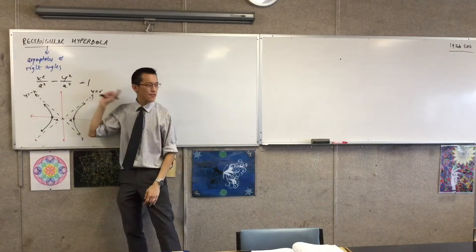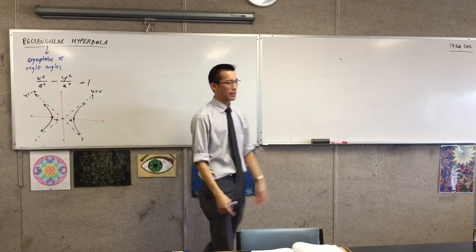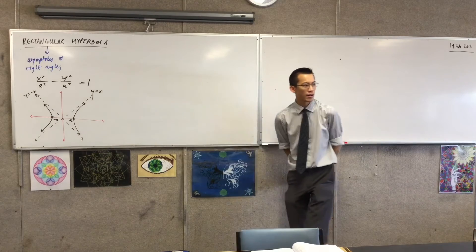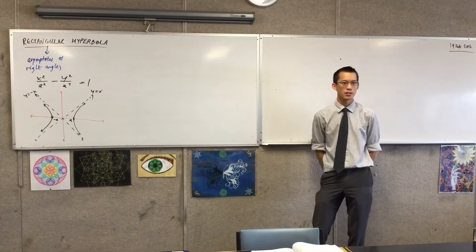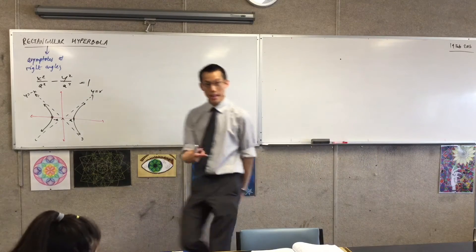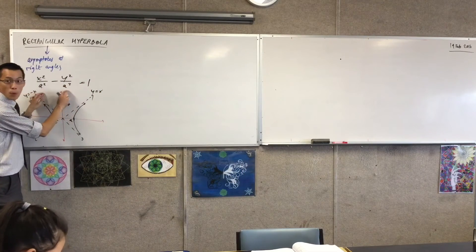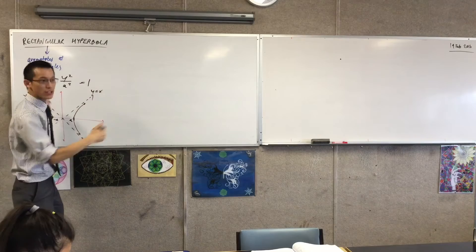if I gave you any hyperbola, and I said, okay, tell me some features about this, what's the first thing you write down to work out the features like foci and directrices? The first thing you write down is that identity, that equation, which connects the two proportions with the eccentricity.